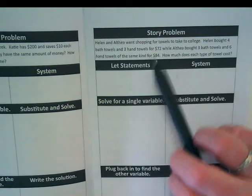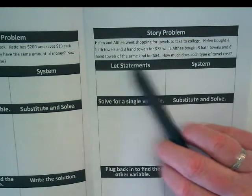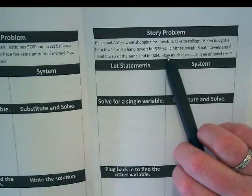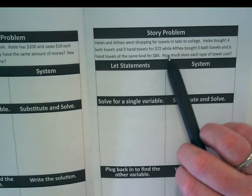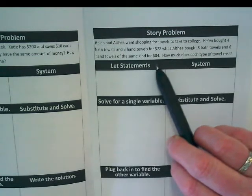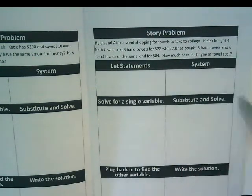Helen and Althea went shopping for towels to take to college. Helen bought four bath towels and three hand towels for $72. They also are not buying the cheapest towels to go to college. Althea bought three bath towels and six hand towels of the same kind for $84. How much does each type of towel cost?